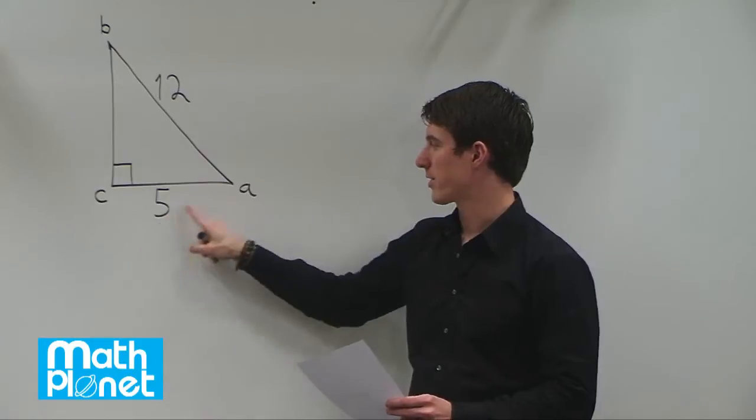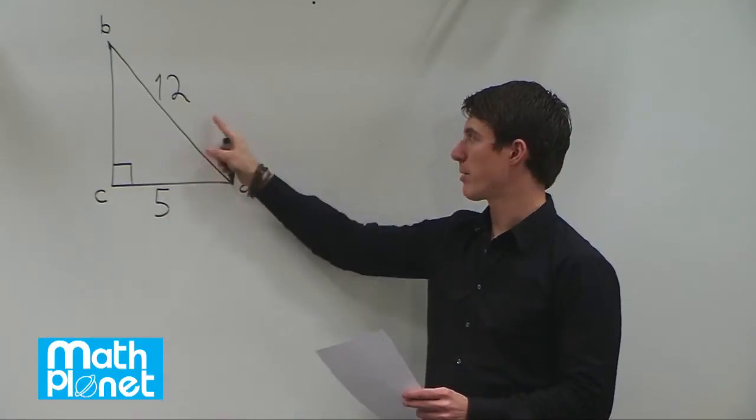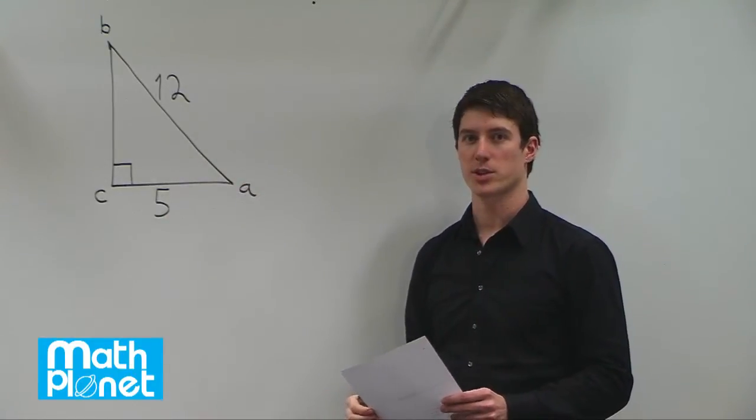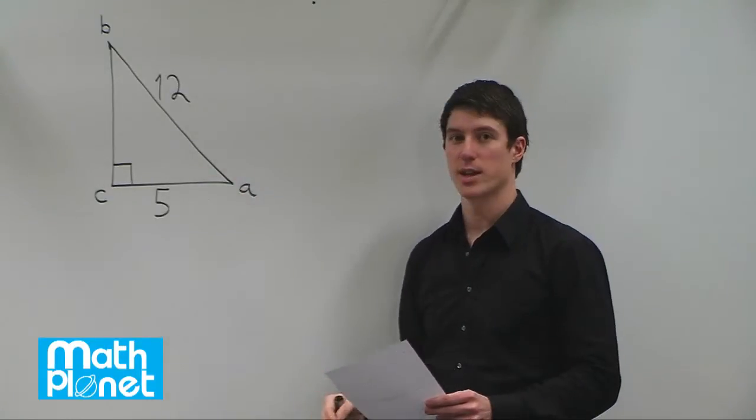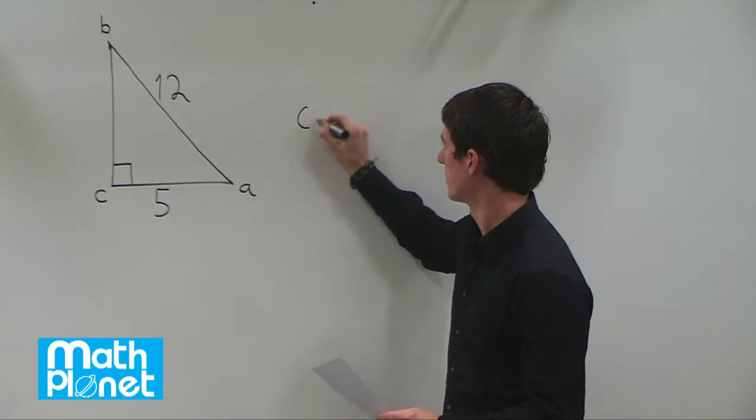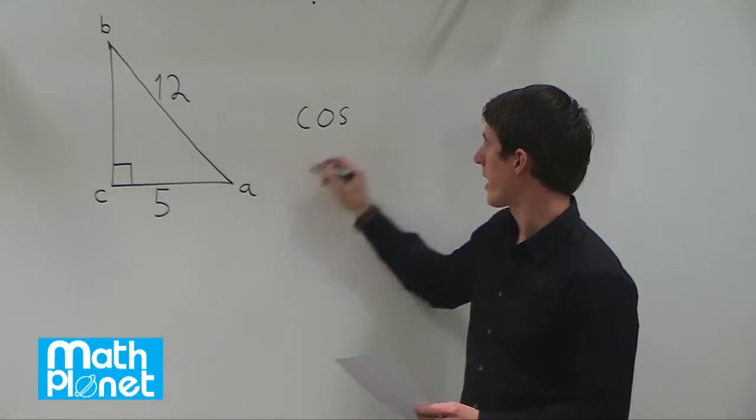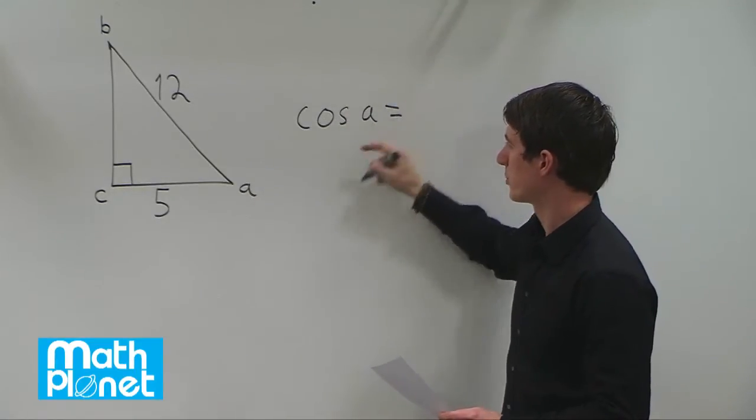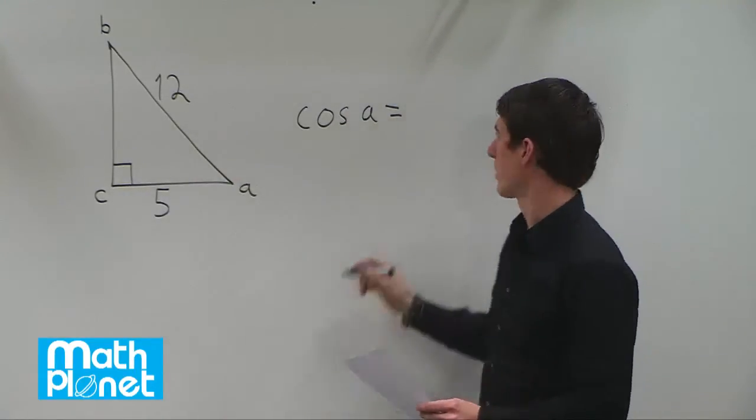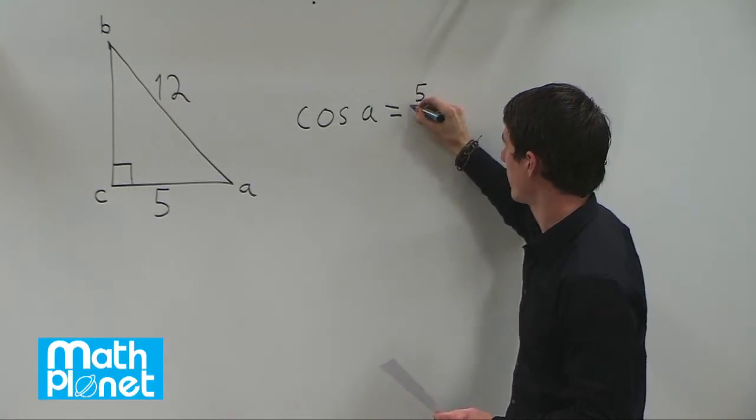We're given the adjacent side to this angle A and the hypotenuse. The trigonometric function that uses adjacent and hypotenuse is cosine. So we know that the cosine of A is equal to the adjacent divided by the hypotenuse, so 5 over 12.